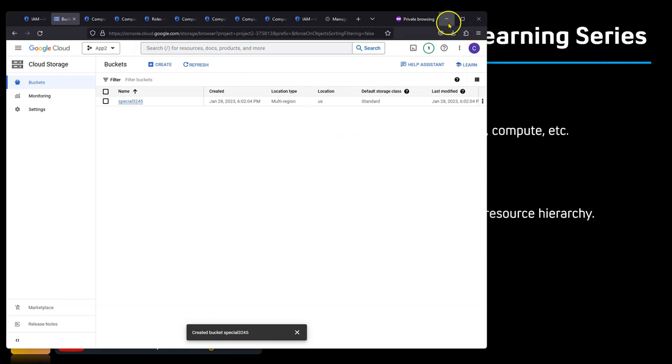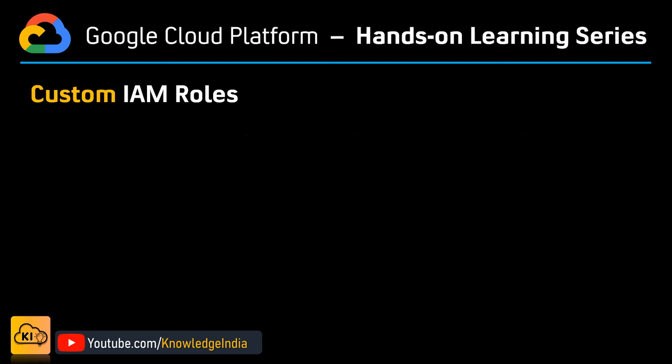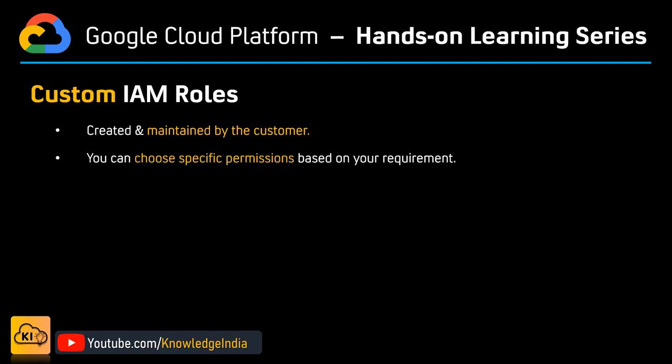So you should select specific roles aligned to a person's requirement and allocate only those roles. That was predefined IAM roles — but there could be a scenario where even predefined IAM roles don't fulfill the requirement. That's where custom IAM roles come in. Custom IAM roles are created and maintained by the customer. You can choose specific permissions at a fine-grained level, and this really helps you implement the principle of least privilege.